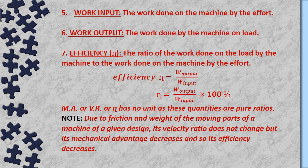It is important to note that due to friction and the weight of moving parts, the velocity ratio of a machine does not change, but its mechanical advantage decreases, and so its efficiency also decreases. The velocity ratio depends on the design of the machine — for example, in scissors the blades are longer than the handles, but in pliers the handles are longer than the blades. So velocity ratio remains the same, but due to friction and weight of moving parts, the mechanical advantage and efficiency in actual cases are always less than ideal.